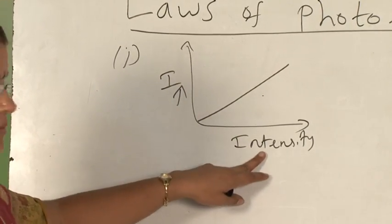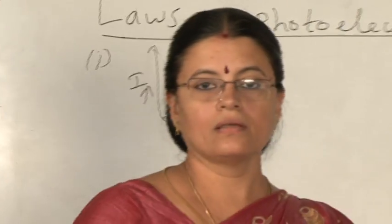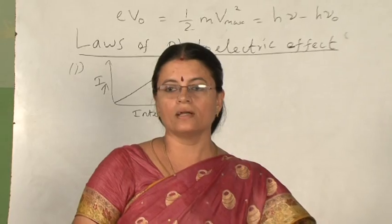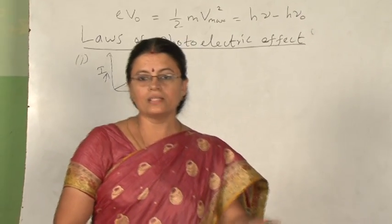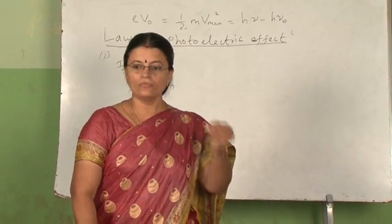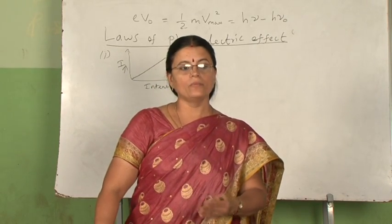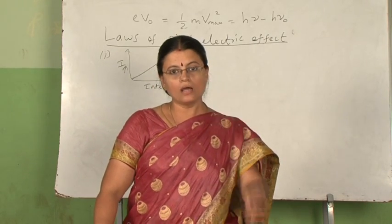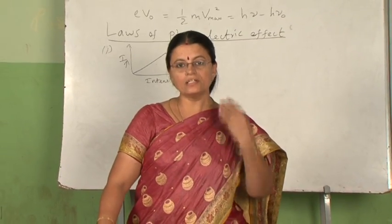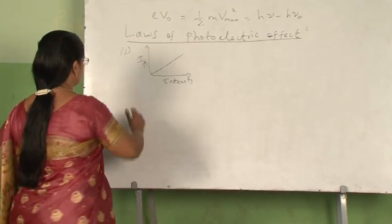The intensity of incident light is actually a measure of the number of photons falling on the metal surface. Because it is a one-to-one interaction, as the number of photons falling on the metal surface increases, there will be a large number of photoelectrons emitted, which in turn increases the photoelectric current. So that is the first law.